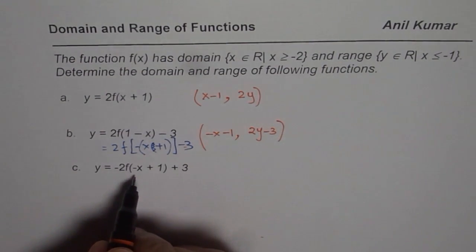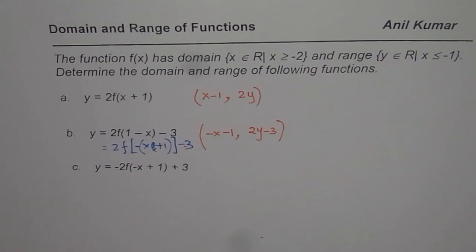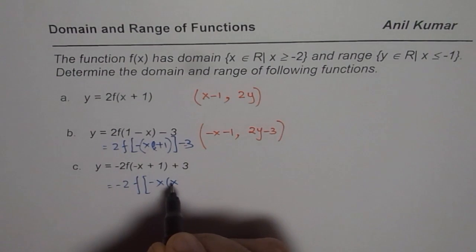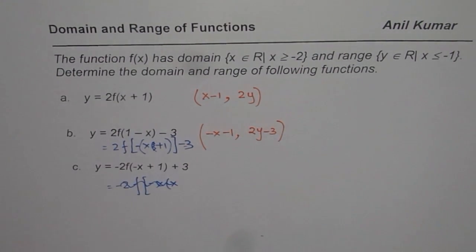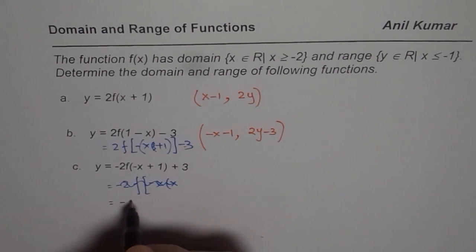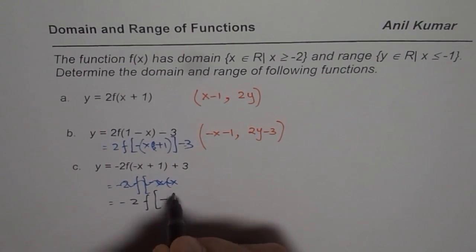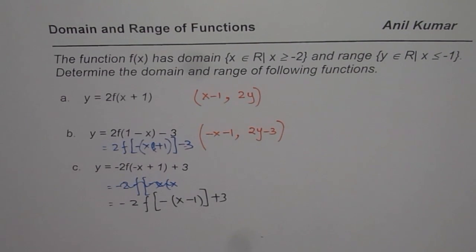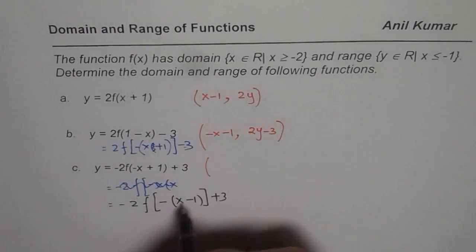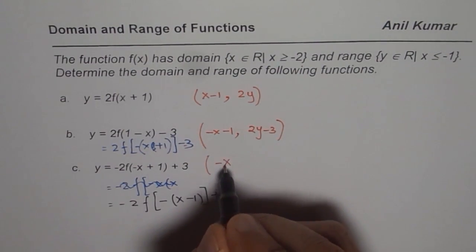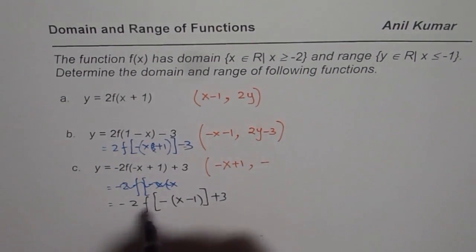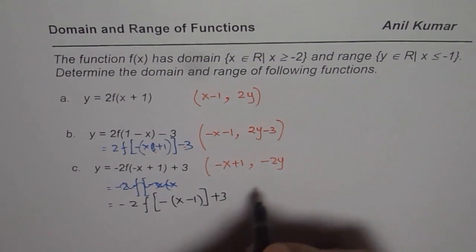For the last function, we will factor again as we did before. Let me rewrite this — it equals minus 2 f of minus x, and we get x minus 1, plus 3. So the transformation in this case is: for the x values, we get the negative of the original x value and then move right, so plus 1. The y values get multiplied by negative 2 and we add 3.